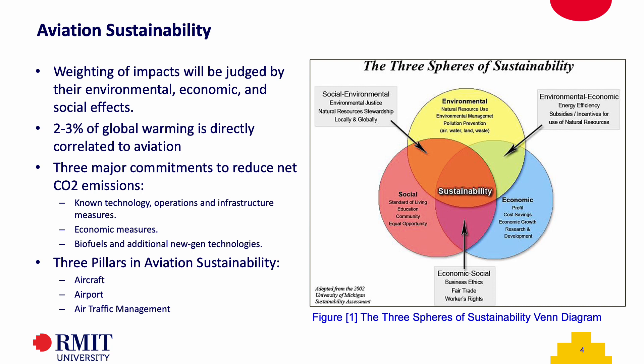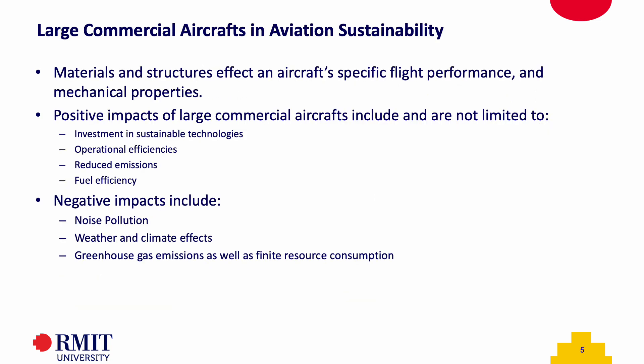Three major commitments to reduce net CO2 emissions are known technology, operations and infrastructure measures, economic measures, biofuels, and additional new-generation technologies. The aircraft pillar is one of the three pillars in sustainable aviation. It aims to design aircrafts to be more efficient and aerodynamic through the five pillars of aircraft design and operations. The strategy area of today's presentation, being structural mechanics and materials, will have us explore how large commercial aircrafts play a role in aviation sustainability both positively and negatively.